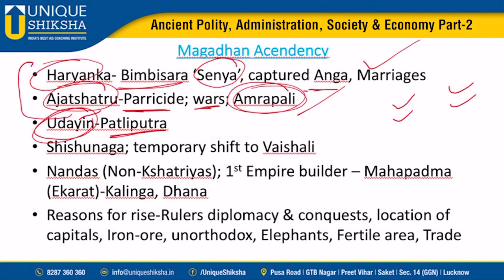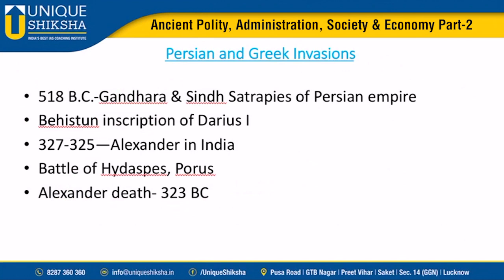The Shishunaga dynasty followed, temporarily shifting the capital; nothing much else significant happened there. Then came the most important dynasty before the Mauryas - the Nandas, a non-Kshatriya dynasty considered the first empire builders. Mahapadmananda, the 'Ekarat' or sole sovereign, attacked Kalinga and brought a Jina image. He was followed by Dhanananda, who was then removed by Chandragupta Maurya, establishing the Maurya dynasty.